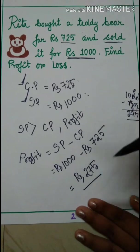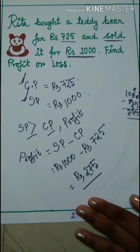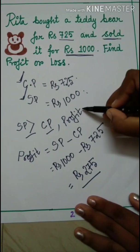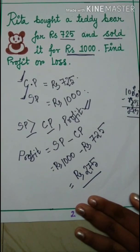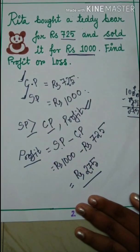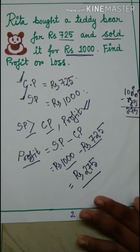After that we have to see which is greater. Here SP is greater than CP. Whenever SP will be greater than CP, that time it will be profit. And the formula of profit will be SP minus CP. Then you will just write the number and you will do the subtraction.